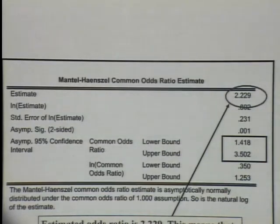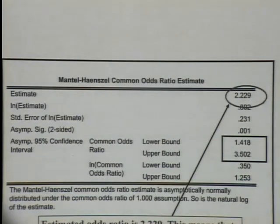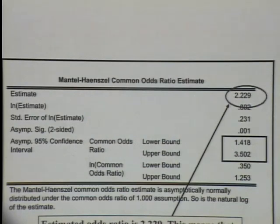Logistic regression is probably an easier model to incorporate more than one confounder — including both continuous and qualitative variables. We'll look into that next week. I also have the R code for the Mantel-Haenszel analysis on my instruction page.